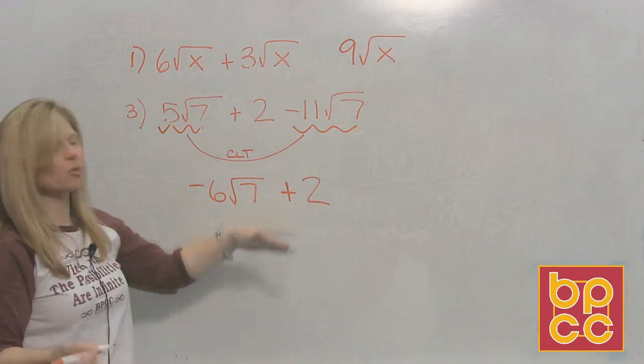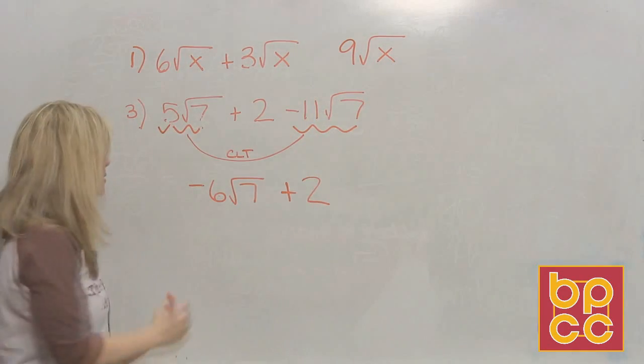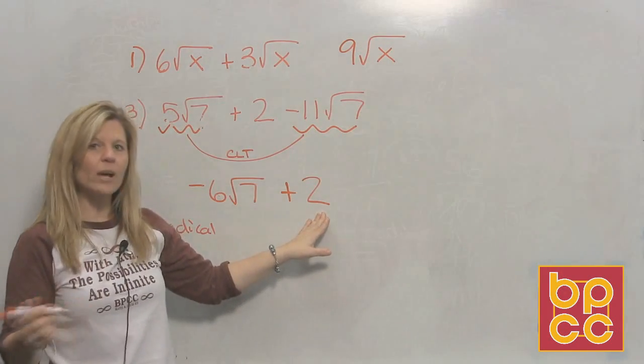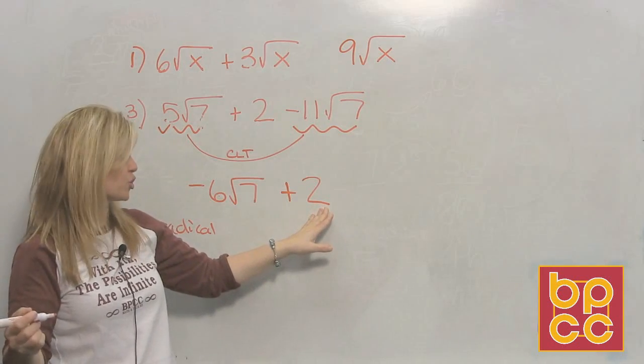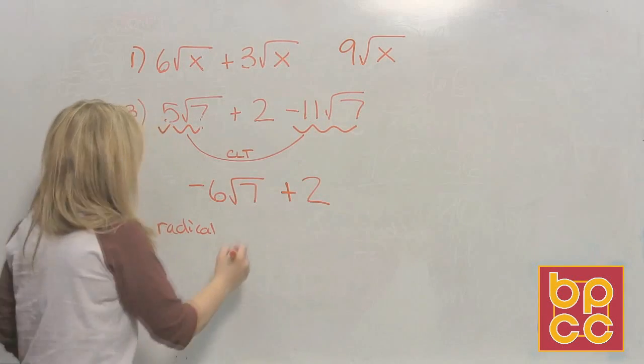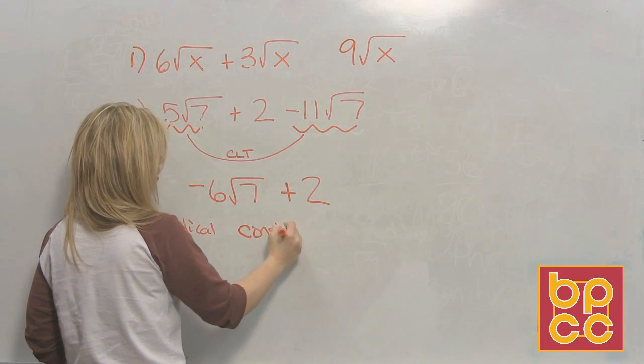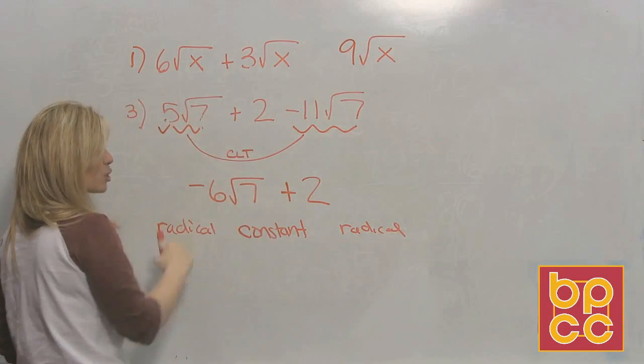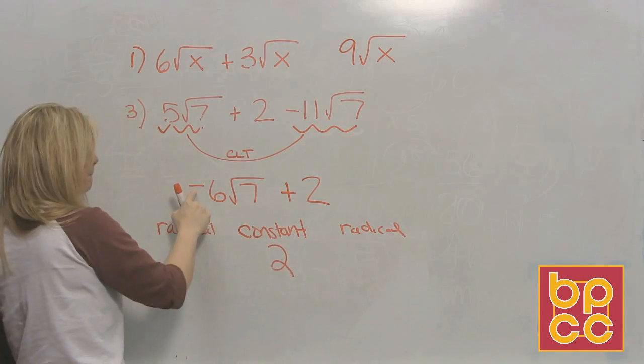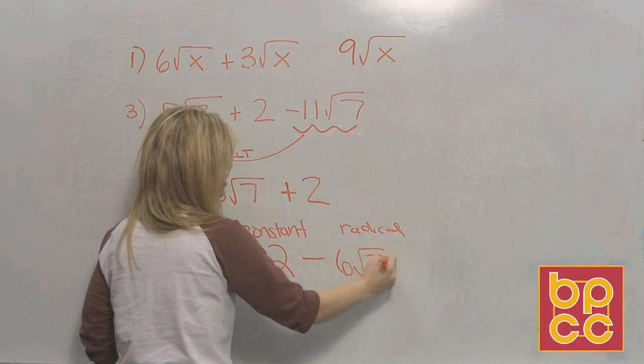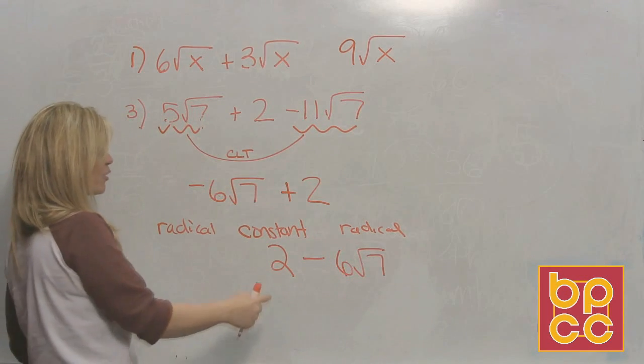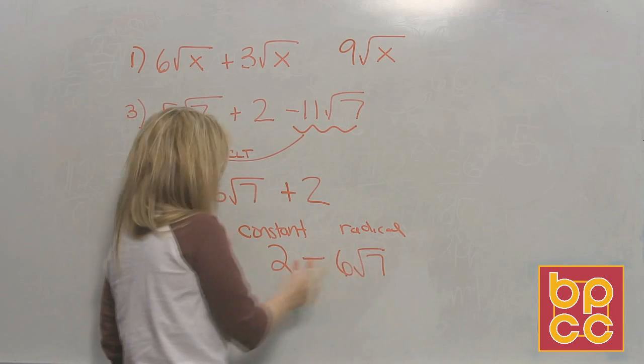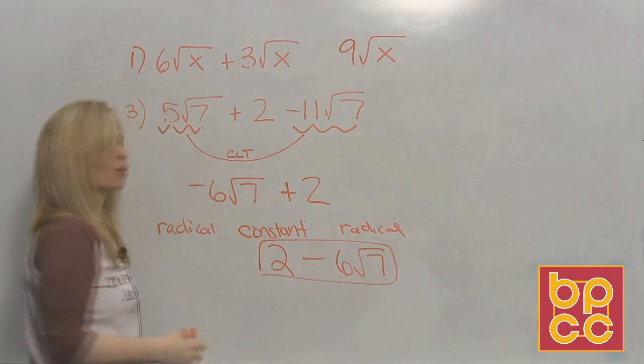Now what about the plus 2? It's a whole number. Is a whole number like a root? No. So what do we do is we bring it down. Now, unfortunately this answer is not written in the right form. In radical world, we do not like to put the constant in the back. And the reason why is, if you put it in the back, then some of you are going to assume the 2 is part of the root, and it's not. So in radical world, we always write the constant first, and then we write the radical, the root. So this answer written correctly would be 2 minus 6 square root 7. And we would know we can't go on any further because, again, this says subtract. This is a whole number. This is a root. They're not alike, so we can't go on any further. That is our final answer.